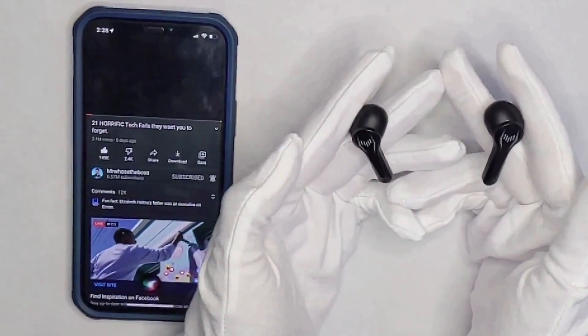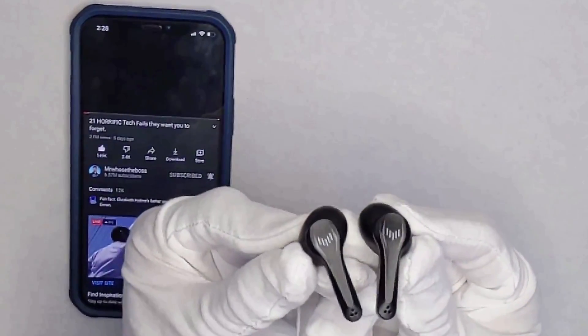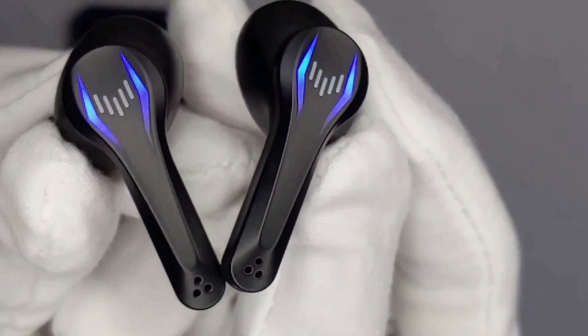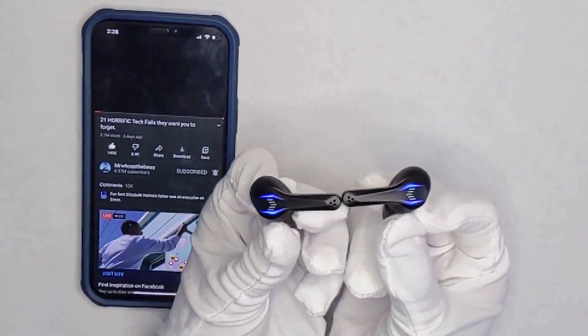Press and hold the right earbud for two seconds to switch between game and music. There it goes in game mode and it has a breathing effect for the LEDs. It also has three microphones here. I'll do an audio test right now.